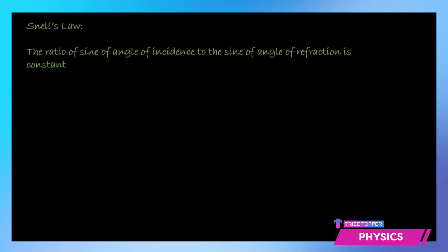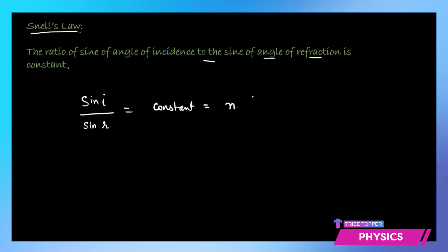There is an important law related to refraction: Snell's law. This law states that the ratio of the sine of the angle of incidence to the sine of the angle of refraction is constant. So sine i divided by sine r remains constant, and we call that constant the refractive index, denoted as n. This constant is called the refractive index of the medium.